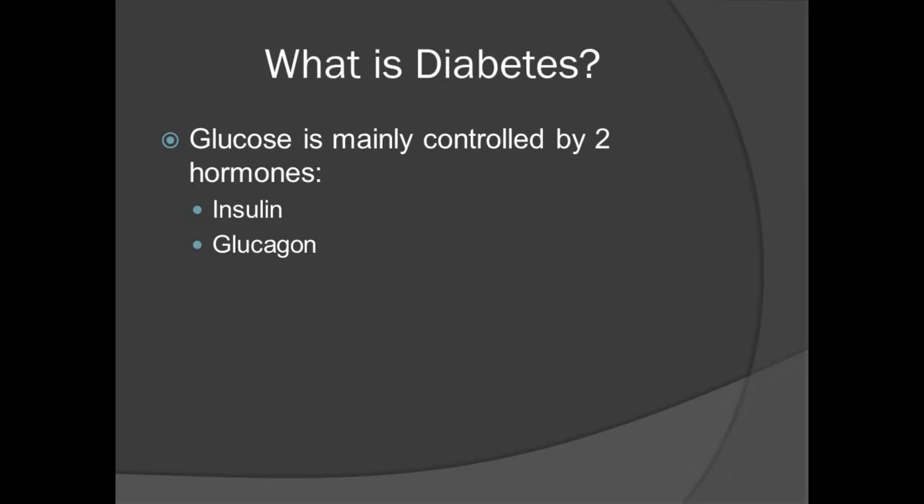What is diabetes? It is the inability to regulate one's blood sugar levels. Some people believe that diabetes only means high blood sugar levels, but diabetes also affects the body's ability to regulate low blood sugars as well. Glucose is controlled mainly by two hormones in the body — insulin and glucagon — though there are definitely other hormones involved.